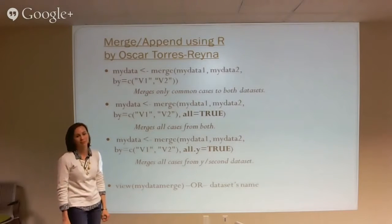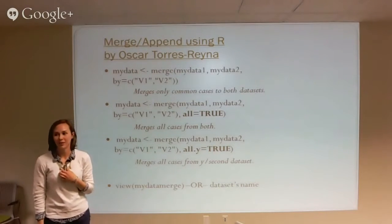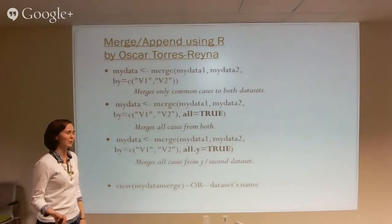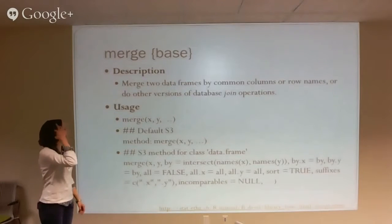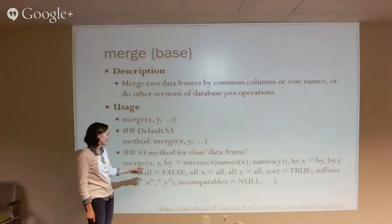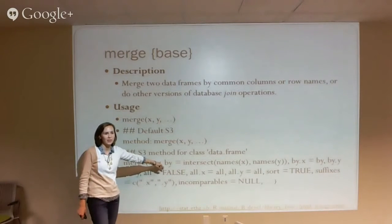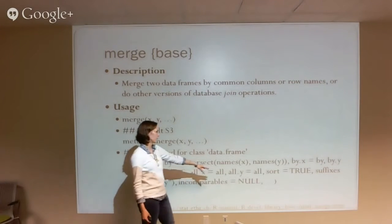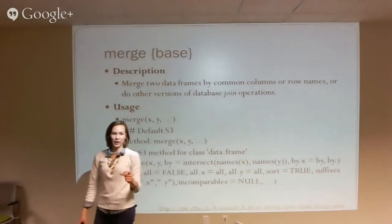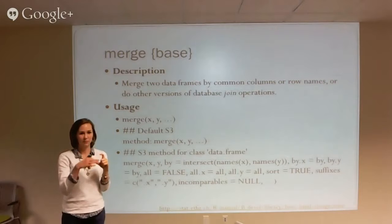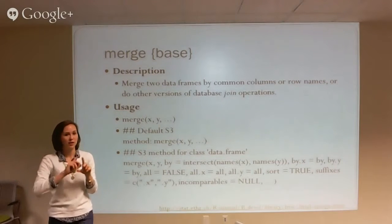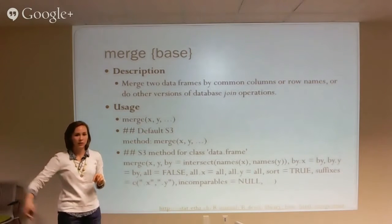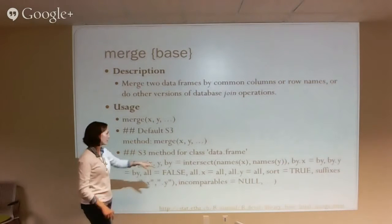The question was about what V1 and V2 is. Let me break it down a little further. Whenever you're merging two data sets, there's a 'by' command — that's whatever variable you're going to be merging on. For example, if it was gender, you would put in 'gender' as the name of your variable, using a little c with parentheses and quotation marks around whatever you named it. You can actually merge multiple variables as long as they're listed with that 'by' command.